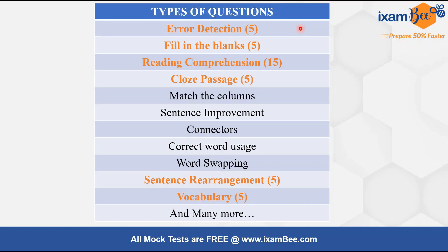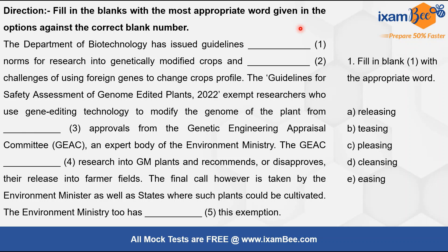Moving on to the cloze passage first. I would request that you first pause the video and try to solve it yourself, then resume and tally your answer. The first blank: 'The Department of Biotechnology has issued guidelines, [blank] norms for research.' Norms can either be eased or made more stringent. 'Releasing' is not correct since guidelines are already said to be issued. 'Teasing' means to trouble somebody, 'pleasing' means to make someone happy, 'cleansing' means to clean — none fit. 'Easing' means to relax the norms, so option E — easing — is the correct answer.